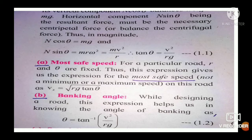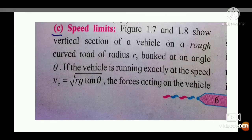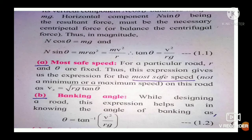The angle made by the surface of road with the horizontal in the case of banking of road is called the banking angle or angle of banking. We also derived the equation for the most safe speed for a vehicle on a banked road, without considering the force of static friction Fs.